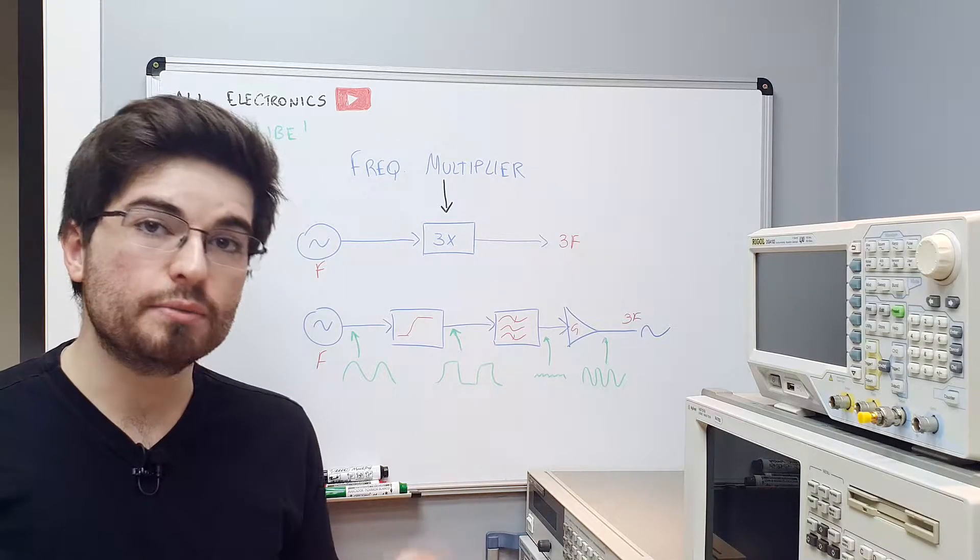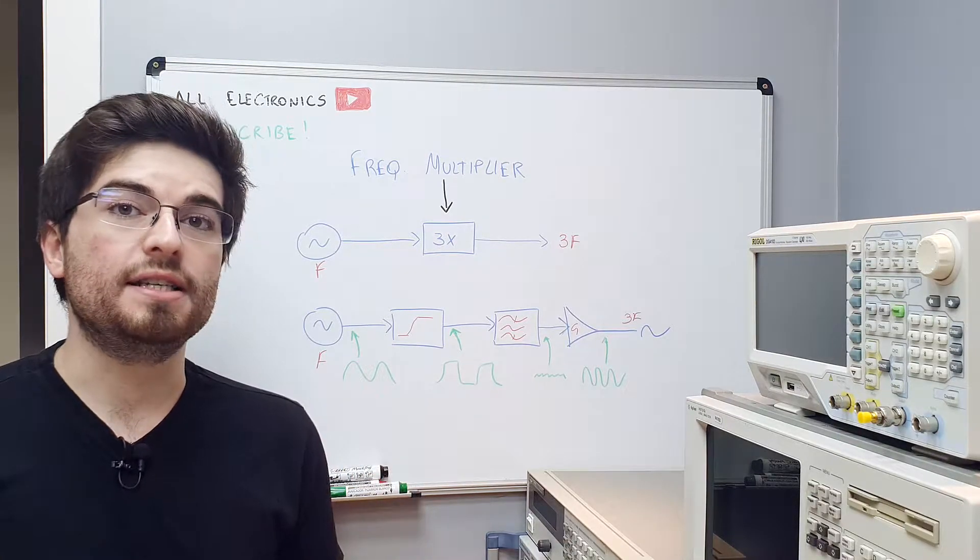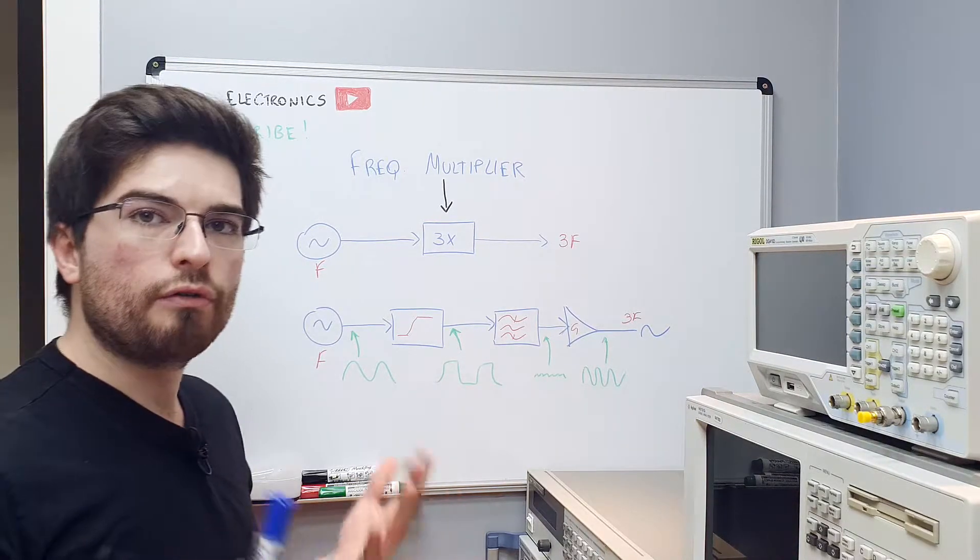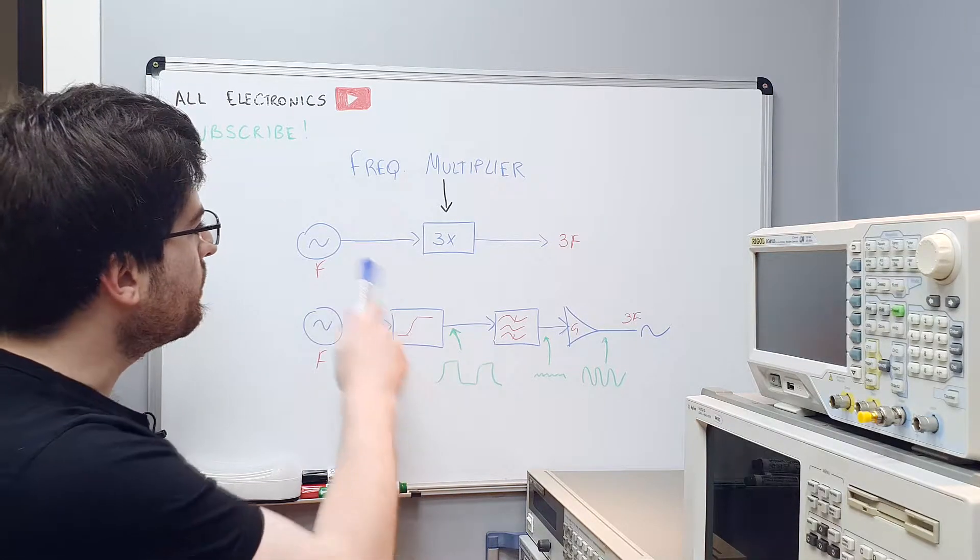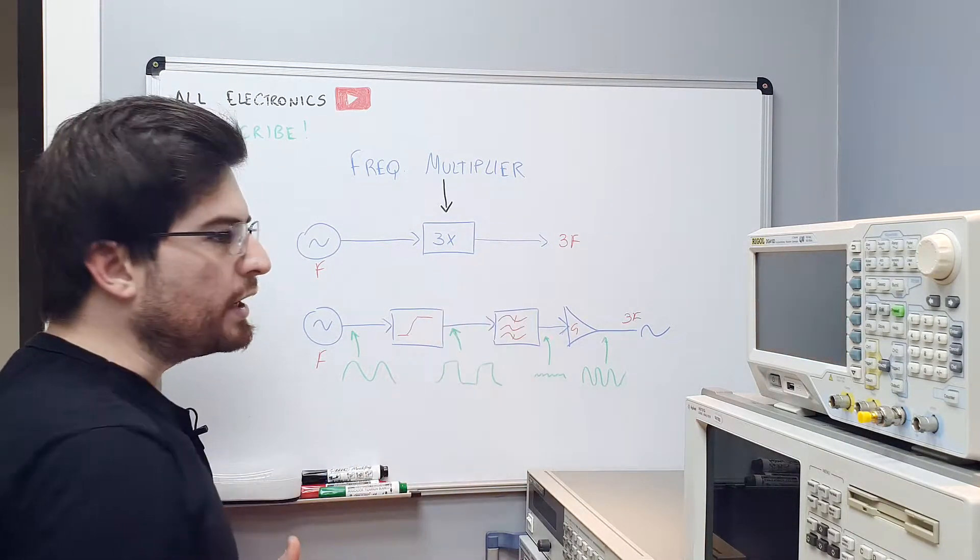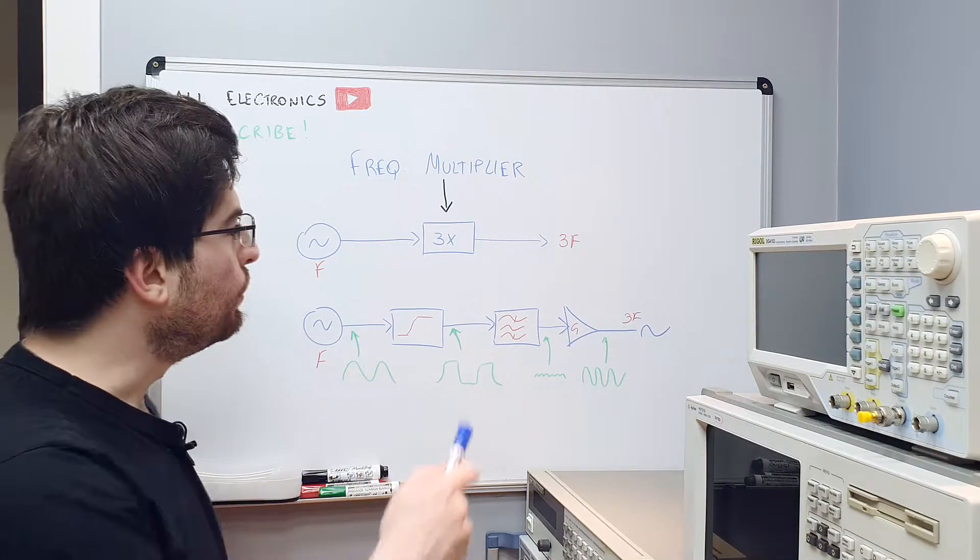So guys, frequency multiplying is a very important topic in frequency synthesizing and radio frequency electronics. Today we're going to see one way of doing frequency multiplying. We're going to use nonlinearities to generate harmonics of a signal and a bandpass filter to filter only the desired harmonics we need. The main goal of frequency multipliers is to have on the input a frequency and at the output a multiple of the input frequency. And the output frequency needs to be in phase or needs to have phase coherence with the input frequency.